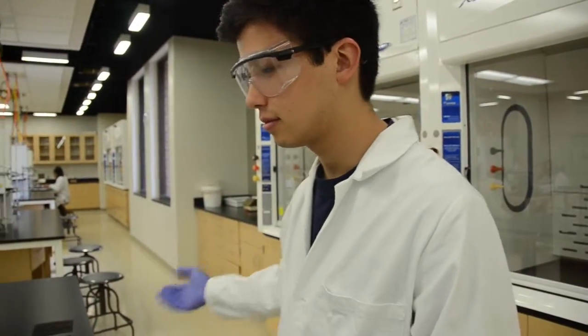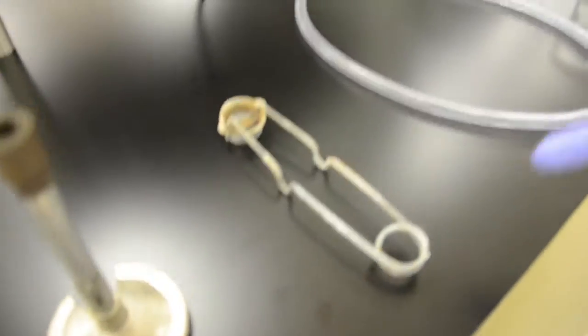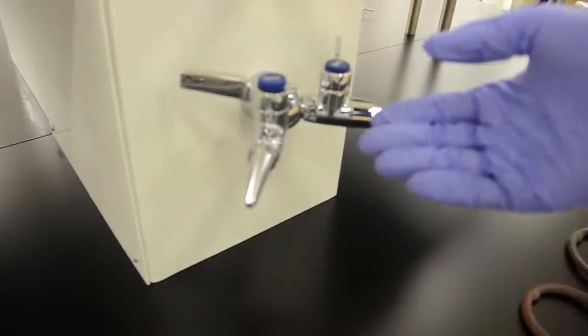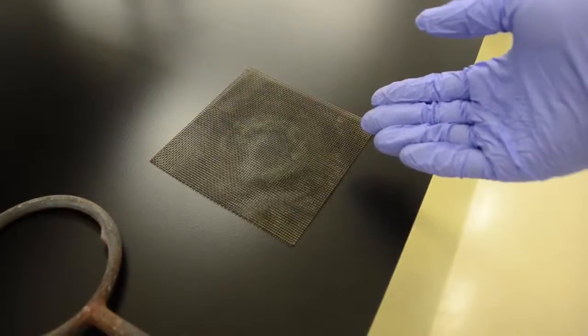First, make sure you gather all the necessary materials in order to start your Bunsen burner and heat a beaker of water. This includes the Bunsen burner, a Bunsen burner striker, gas tubing, a gas source, a 250 milliliter beaker, two ring clamps, and a wire mesh screen.